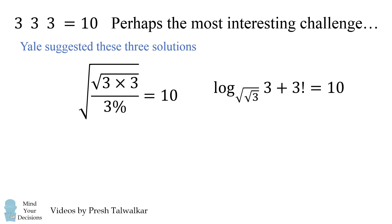Another solution is you take the log with the base, the square root of the square root of 3. You take that of 3, and then you add 3 factorial. Now the logarithm will evaluate to be 4, so then when you add 3 factorial you get to 10.